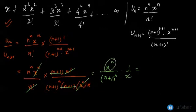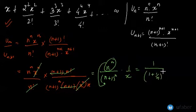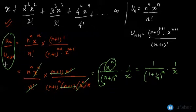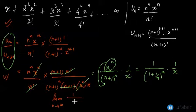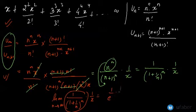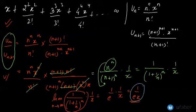Bringing terms into the denominator gives 1 / (1 + 1/n)^n · (1/x). This is the value of the ratio u_n / u_{n+1}. Taking the limit as n → ∞, since the limit of (1 + 1/n)^n = e, we get 1/(e·x). This is a variable value, not a constant.